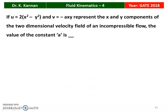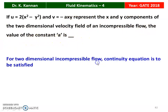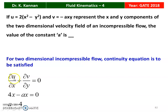Next question from the 2018 question paper: if U equal to 2(X² minus Y²) and V equal to minus aXY represent the X and Y components of a two-dimensional incompressible velocity field, find the constant a. For incompressible flow, the continuity equation dou U/dou X plus dou V/dou Y equal to 0 must be satisfied. dou U/dou X = 4X and dou V/dou Y = minus aX. So 4X minus aX = 0, giving a = 4.